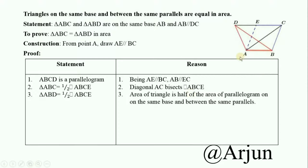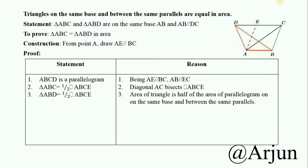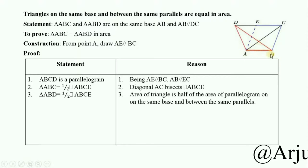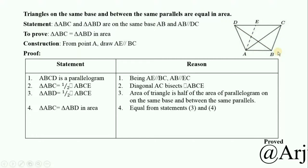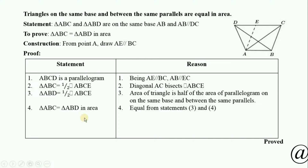Third statement: triangle ABD is equal to half of parallelogram ABCE. By the previous theorem we already discussed, the area of a triangle is half the area of a parallelogram on the same base and between the same parallels. Here, ABD is on the same base AB, and ABCE is also on the same base AB, and both figures stand between the same parallels AB and CD. So triangle ABC equals half of ABCE, and triangle ABD also equals half of ABCE.